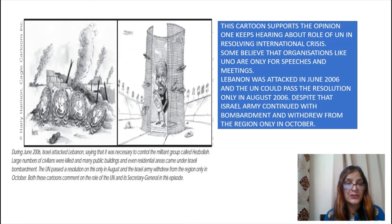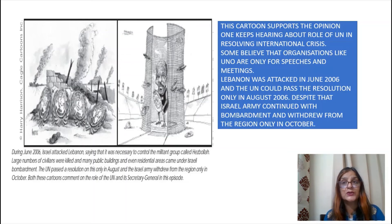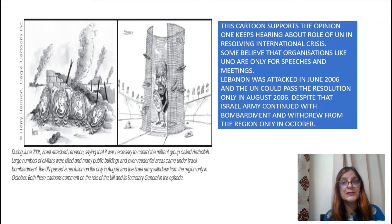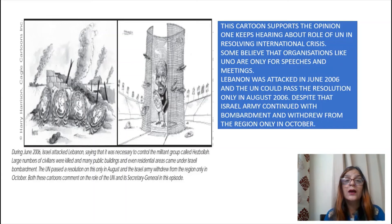The next cartoon is related to the role of international organizations. It relates to June 2006 when Israel attacked Lebanon. The cartoon supports the opinion that the UNO is only a talking shop. Lebanon was attacked in June 2006 and the UN could pass a resolution only in August 2006; despite that, the Israeli army continued with bombardment and withdrew from the region only in October. This cartoon mocks the effectiveness of the UN — only meetings and discussions happen, and no concrete result comes out.